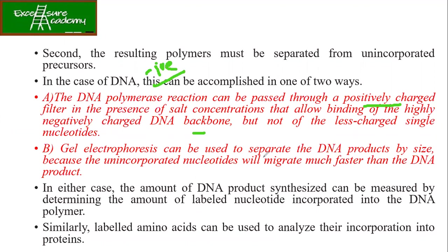Gel electrophoresis can separate the DNA products depending on the size of the DNA being synthesized. Unincorporated DNA piece molecules — wo jaldi move ho jayenge, they will wash out. And what is left in the gel is only your synthesized DNA. So gel electrophoresis can be used to separate the DNA products by size because unincorporated nucleotides will migrate faster than the DNA product. These are the two methods by which you can actually separate. In either case, the amount of DNA product synthesized can be measured by determining the amount of labelled nucleotide incorporated into the DNA polymer.